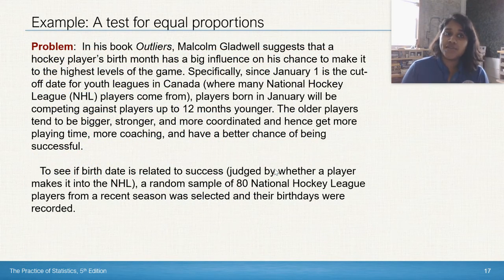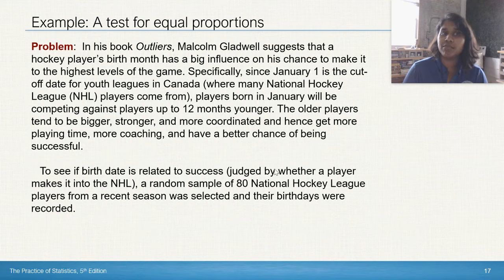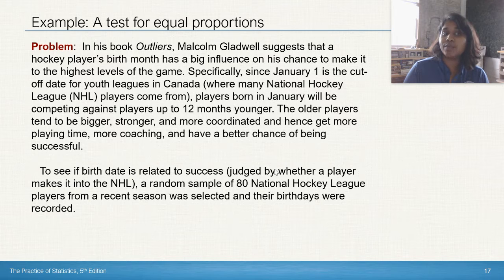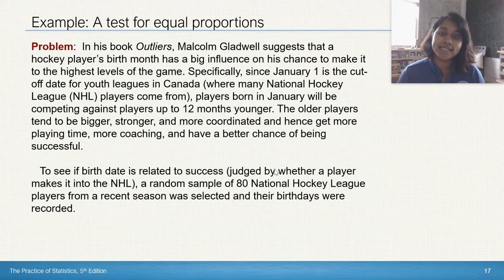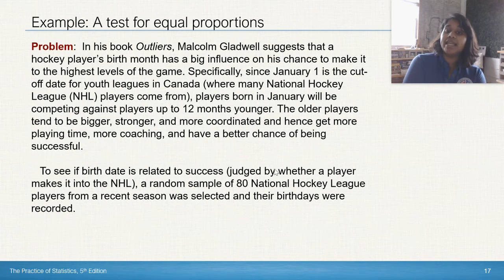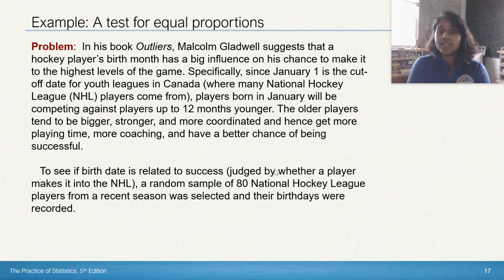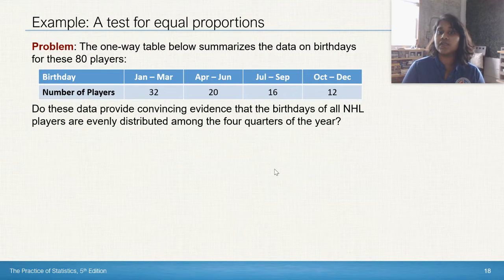So here's our example for ourselves. In his book, Outliers, Mr. Malcolm Gladwell suggests that a hockey player's birth month has a big influence on his chance to make it to the highest levels of the game. Specifically, since January 1st is the cutoff date for youth leagues in Canada, where many of our NHL players come from, players born in January will be competing against players up to 12 months younger. So the older players tend to be bigger, stronger, and more coordinated, and hence get more playing time, more coaching, and have a much better chance of being successful. To see if birth date is actually related to success, and our success parameter is going to be whether or not they made it into the NHL. A random sample of 80 NHL players from a recent season was selected, and their birthdays were recorded. Here is that record. So in the first season, 32. Second season, 20. Third season, 16. Fourth season, 12.